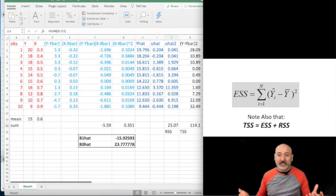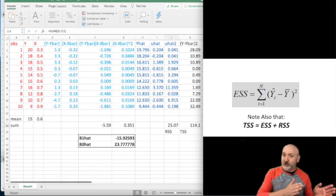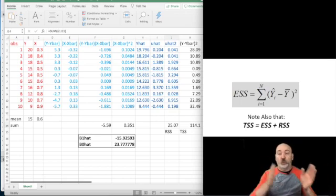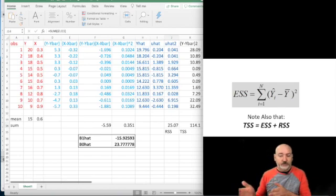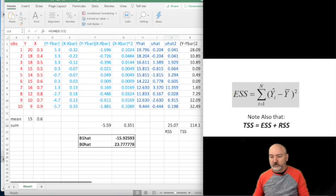And we could do this the easy way, just by noting that all of the variation in Y, the TSS, is either unexplained, the RSS, or explained, the ESS. And we could just calculate it as the difference. But let's verify that that's actually going to work.